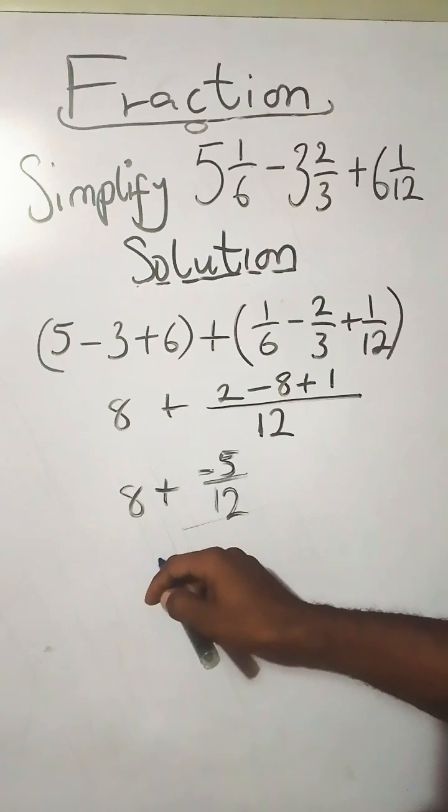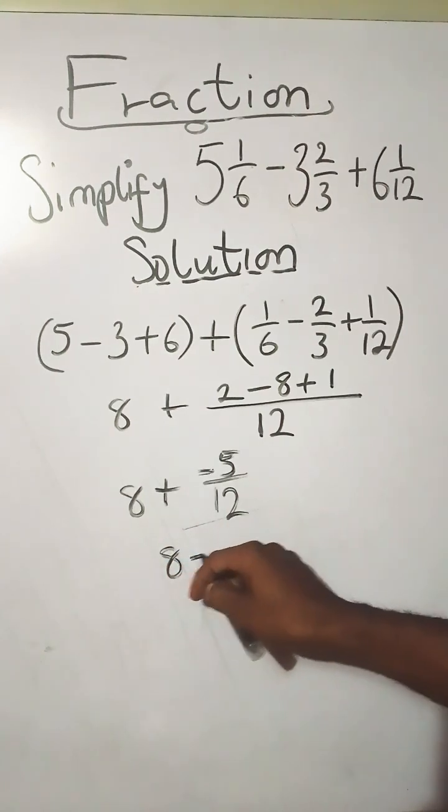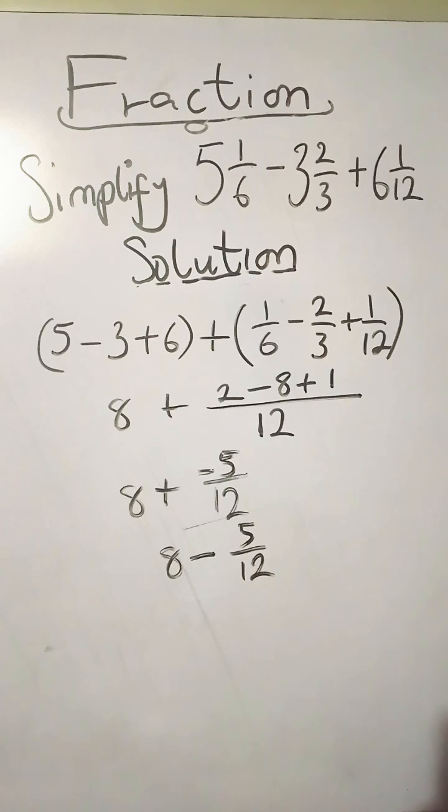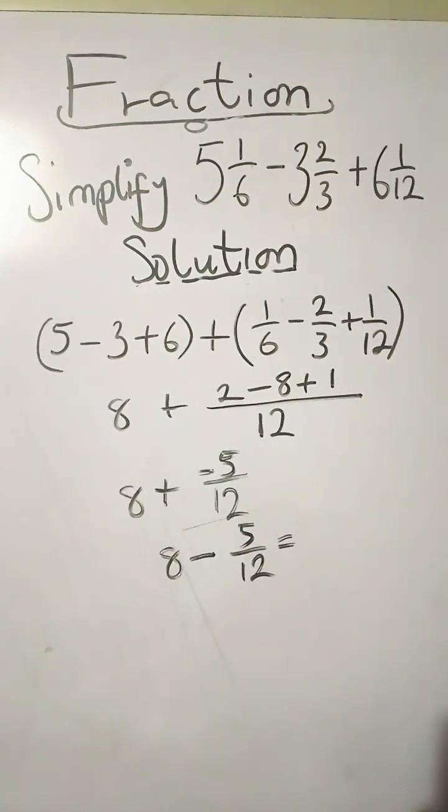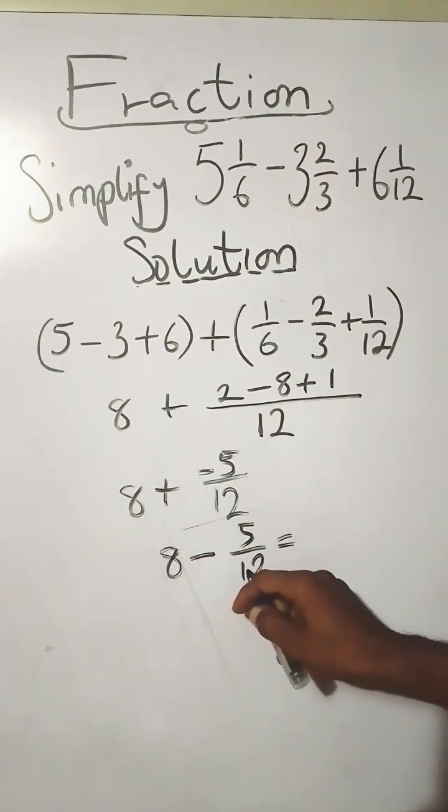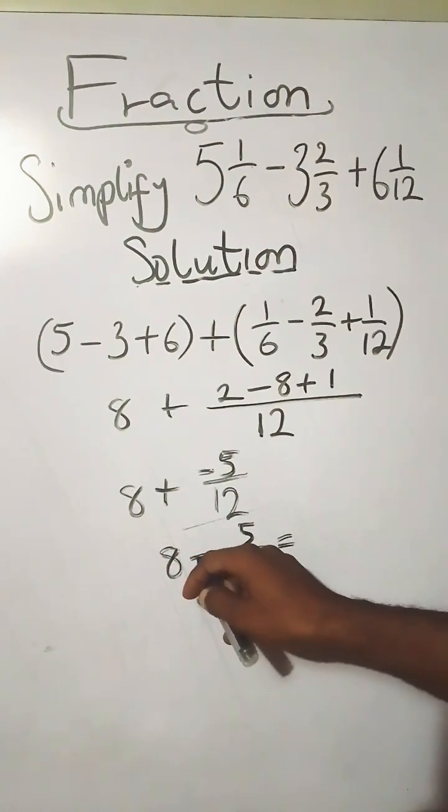You still rewrite it as 8 minus 5 over 12. Now, if you have a whole number and a fraction to sort out, what you simply do is multiply the whole number by the denominator, then apply the operation to the numerator. That gives you 12 times 8 you have 96 minus 5 over 12.